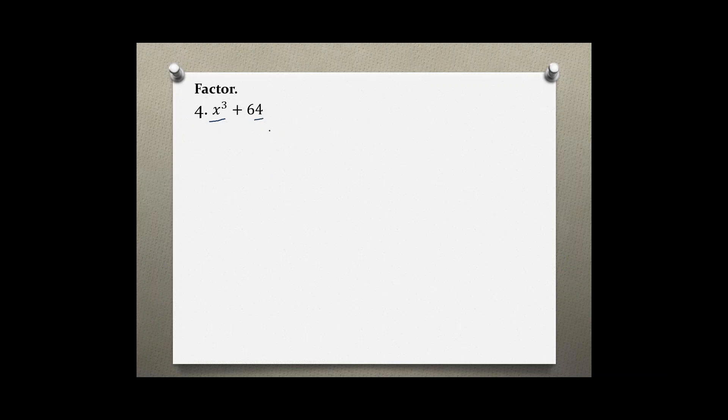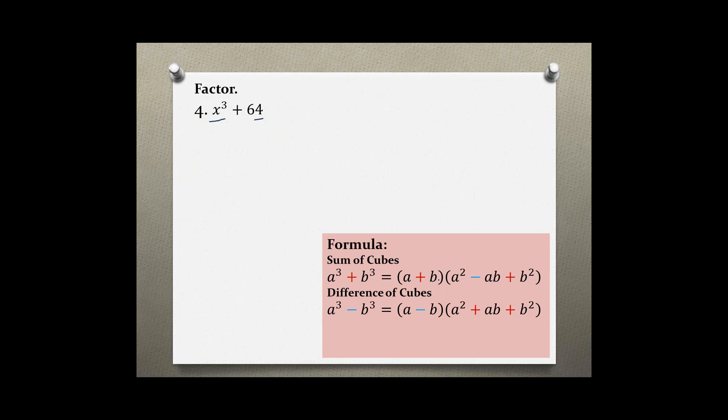To factor the sum of cubes, I need to know a formula. So I have a cubed plus b cubed equals (a plus b) times (a squared minus ab plus b squared). The first sign is plus, then minus, and then another plus. So the signs are alternating.